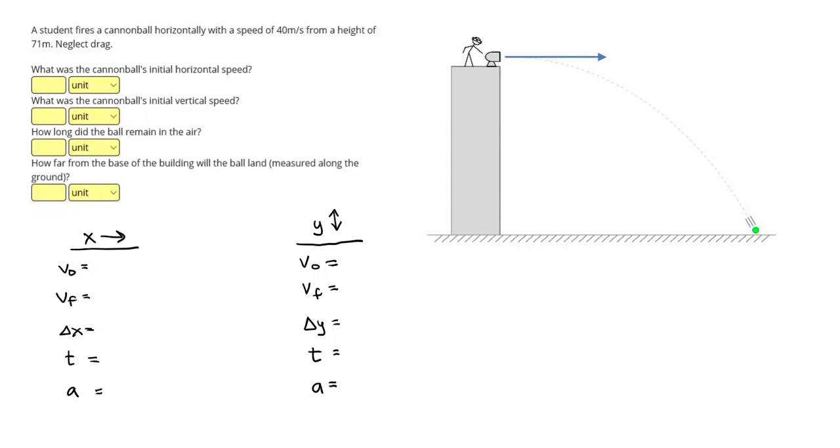A student fires a cannonball horizontally with a speed of 40 meters per second from a height of 71 meters, neglect drag. Alright, in this video, we are solving a two-dimensional problem.